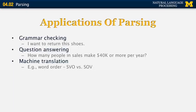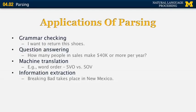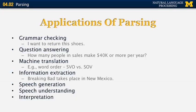Another example is machine translation. Different languages have different word orders, so a language that is subject-object-verb, when translated to a subject-verb-object language, would have to undergo syntactic transformation — and parsing is required for this. Another task is information extraction, where we want to recognize different phrases and how they relate to each other. For example, in 'Breaking Bad takes place in New Mexico,' we want to recognize that 'Breaking Bad' is a TV show and 'New Mexico' is a state. There are many other applications including speech generation, speech understanding, and sentence interpretation.